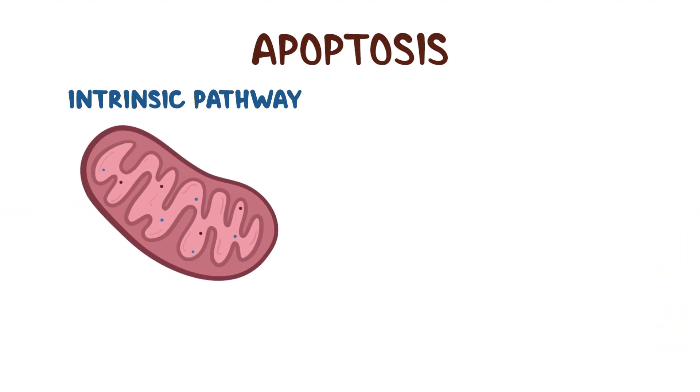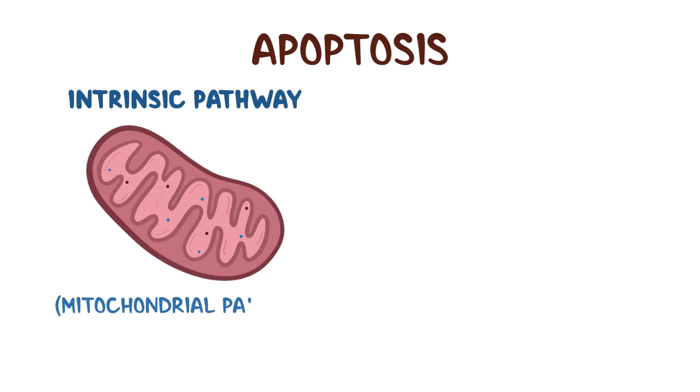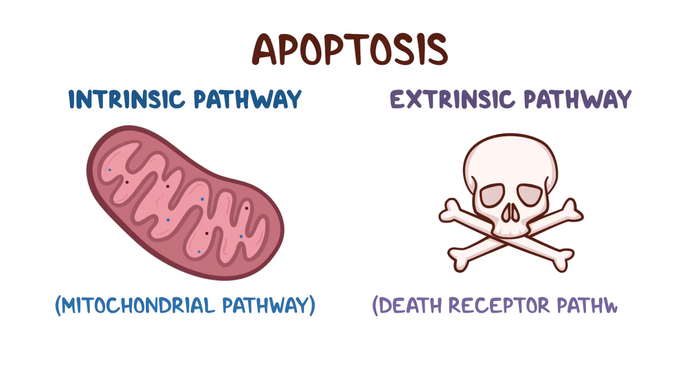In apoptosis, there are two activating mechanisms. The intrinsic pathway, also called the mitochondrial pathway, and the extrinsic pathway, also called the death receptor pathway.